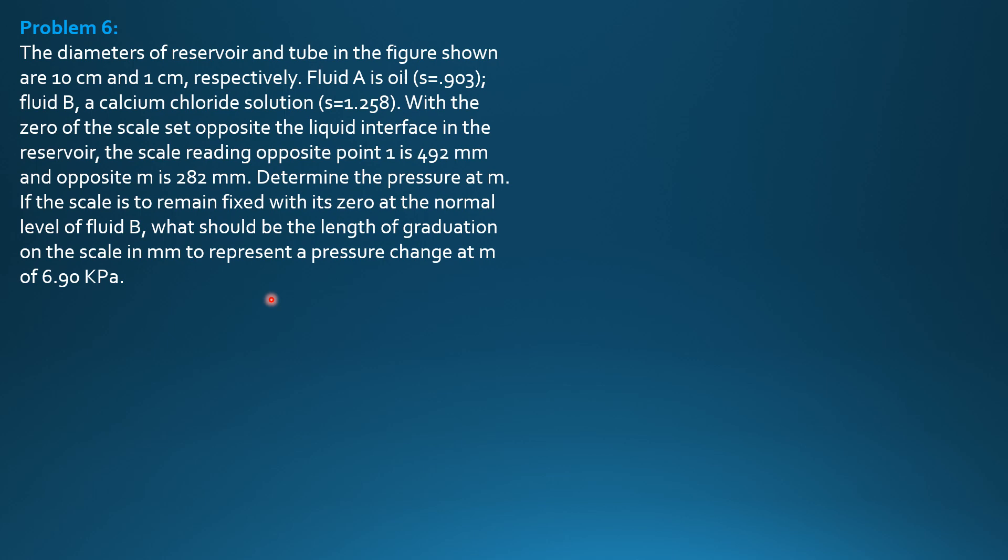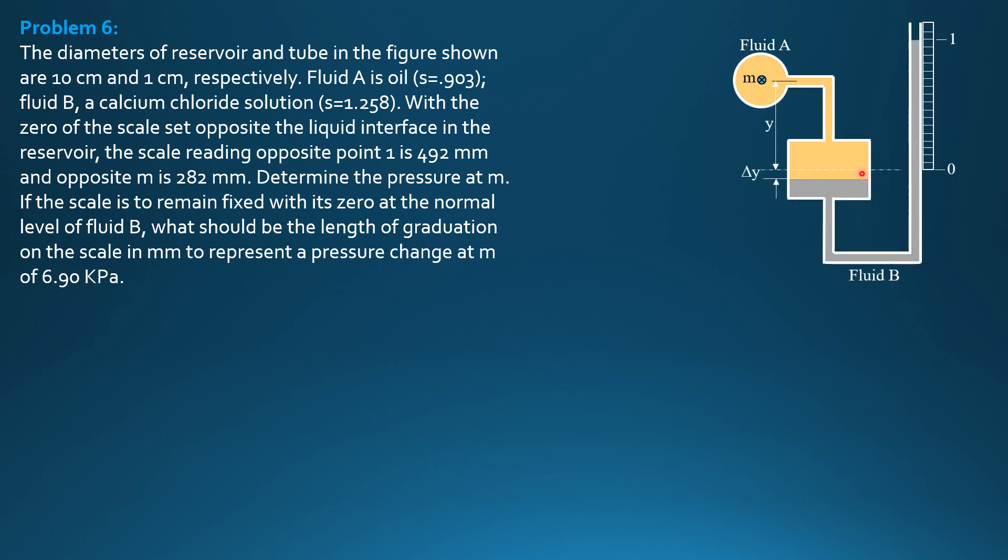If the scale is to remain fixed with its zero at the normal level of fluid B, what should be the length of graduation on the scale in mm to represent the pressure change at M of 6.9 kPa? So here is the given figure.